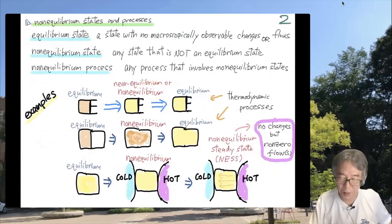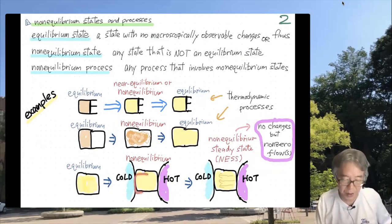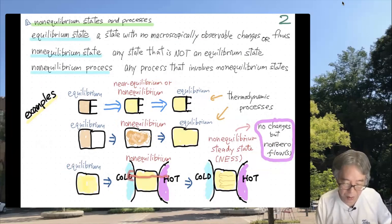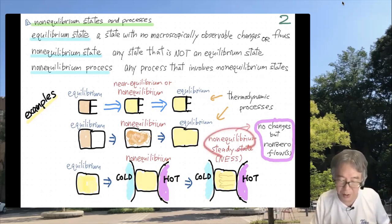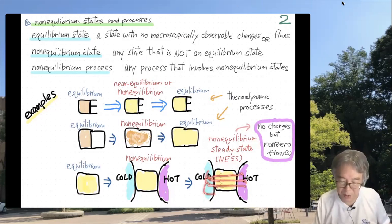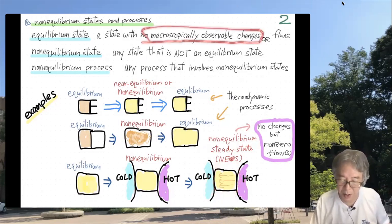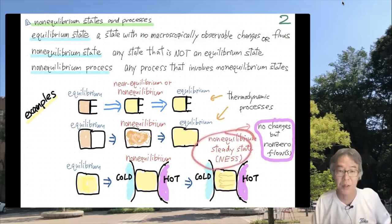Here is an example of a state with no macroscopic changes but non-zero flow. Suppose you place a system between two heat baths with different temperatures. Heat will flow from hot to cold. If the two baths are sufficiently large so their temperatures do not change, after some time you get a non-equilibrium steady state — usually abbreviated NESS — in which there is a steady flow of heat energy from hot to cold. There are no macroscopically observable changes because it is steady, but there is non-zero flow. This is a non-equilibrium steady state.